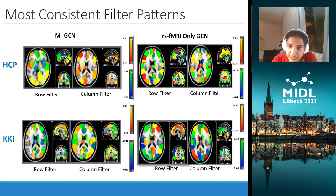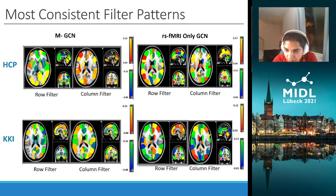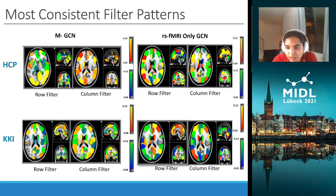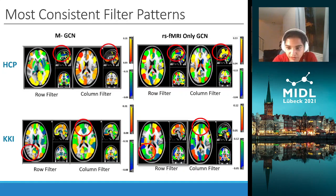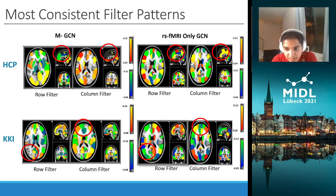As a qualitative comparison, we examine average row and column filter weights learned by our framework in the first layer channels by plotting them as a heatmap. These filters are first matched according to their similarity, and we plot the most frequently occurring filters for the MGCN and the rsfMRI-only GCN. We observed that the MGCN provides slightly more selectivity in terms of patterns, as seen by the spread of the filter weights, which gives rise to comparably sparser patterns in the MGCN versus the rsfMRI-only GCN.